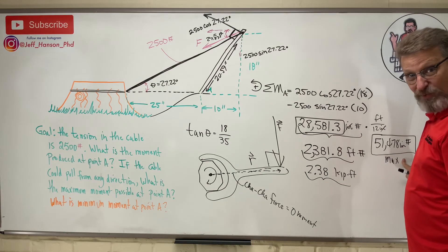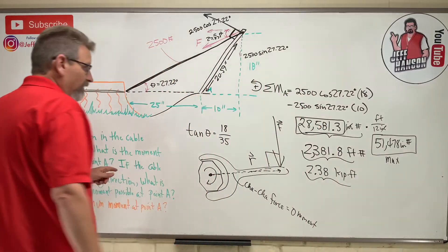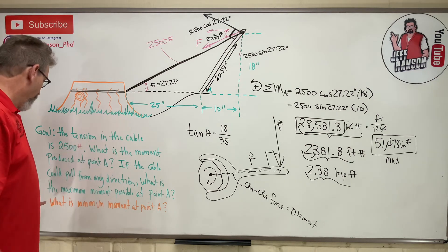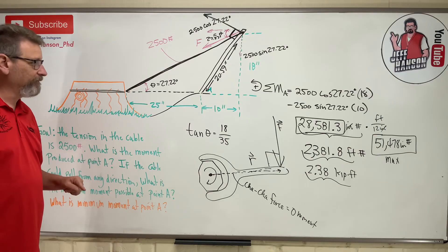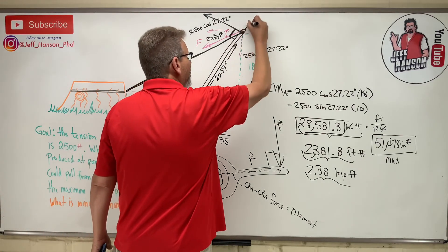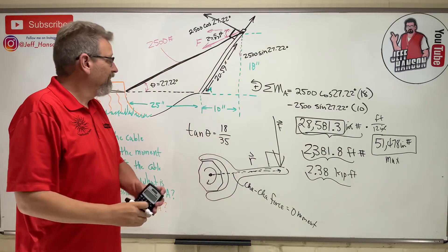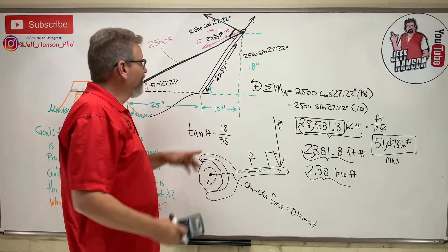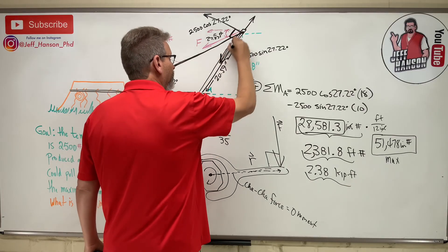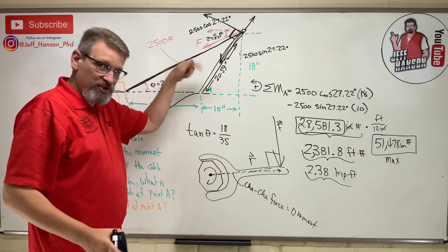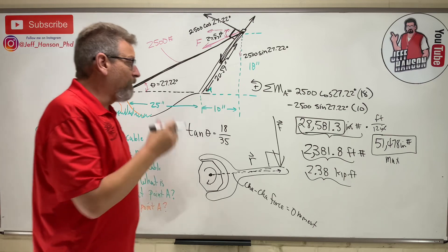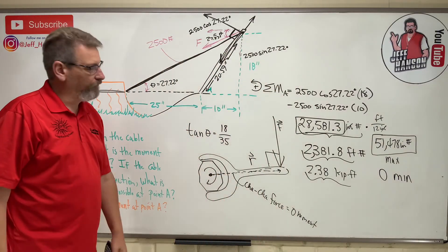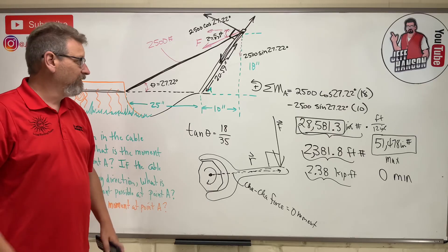If the cable could pull from any direction, what is the max? We got that. What is the minimum moment that that cable could make? Well, that would be here if I pull straight up. Then how much twisting, how much rotating does this pole do if you pull straight on the pole? None. What if I pull this way? What if I pulled straight down on the pole? What do you think? Pull straight down the pole, how much spinning does it do? None. So min moment would be zero inch-pounds, or zero kip-feet, or whatever you want to call it. Zero.